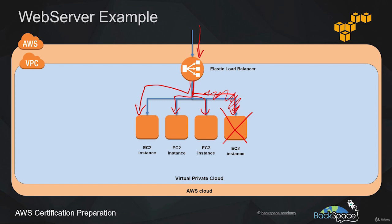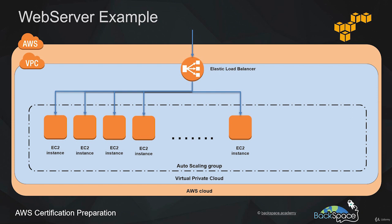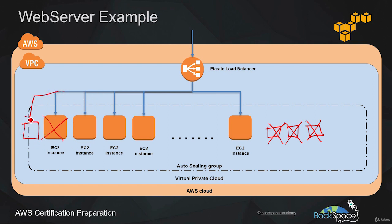But what happens if that demand only lasts for a short period, for example half an hour? It's not practical for us to manually terminate and relaunch instances every hour. That's where the Auto Scaling service comes in. It can automatically launch EC2 instances when demand increases and automatically terminate them when demand goes down. It also performs health checks and can replace an unhealthy instance with a healthy one, all automatically without you having to do anything.